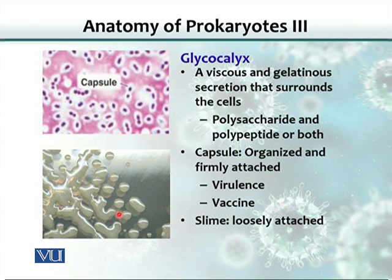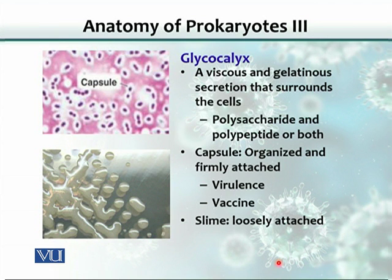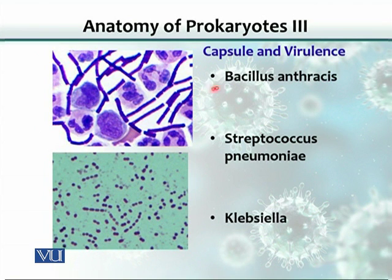This is a colony, what we see on nutrient agar. If we grow slime-secreting or capsule-forming bacteria in the lab, the colonies look glistening and mucoid in morphology and appearance. Not all organisms possess this capsule — only some do. These are three examples selected.